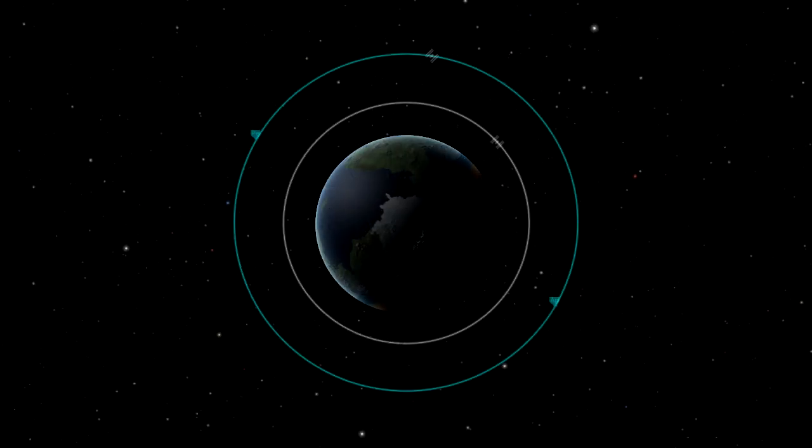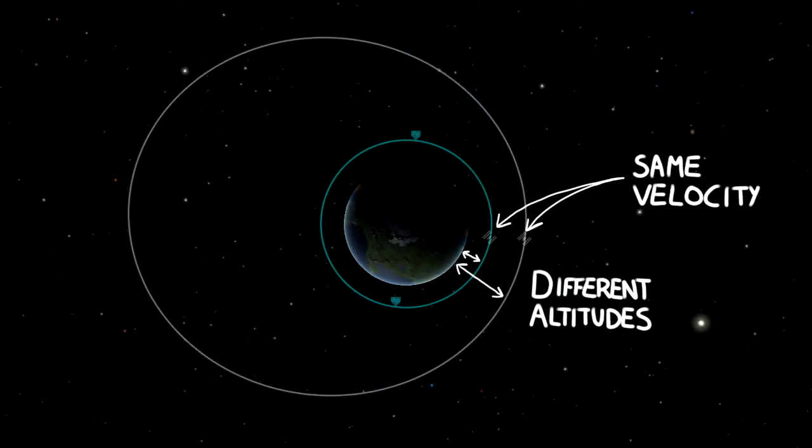Next, some orbital mechanics. Objects in a lower altitude orbit have to travel faster than objects in a higher altitude orbit, as less velocity is required at higher altitudes to be in a circular orbit. However, it's perfectly possible for objects at different altitudes to have the same velocity. They just wouldn't follow a circular path, that would be elliptical.